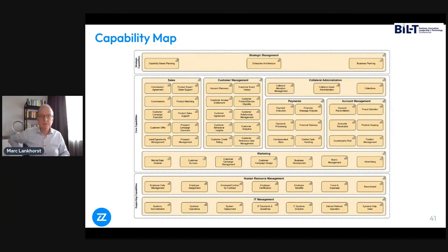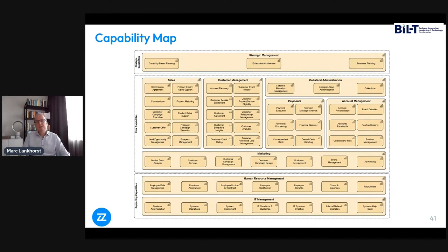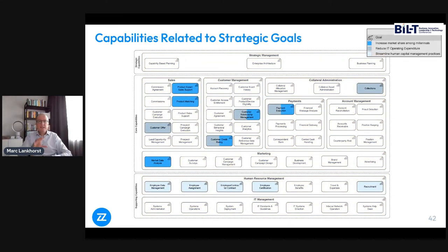Here we do have an actual Archimate picture — the capability map of our example enterprise — with the classical three-layer structure: strategic capabilities at the top, core capabilities in the middle, and enabling or supporting capabilities at the bottom. This is typically used for things like heat mapping and all kinds of drill-downs — a linking pin in a map that's really central to all kinds of analyses and communication. If you relate these capabilities to the strategic goals — increasing market share among millennials and reducing IT operating expenditure — and do a heat map, you can see which capabilities are relevant for which goals.